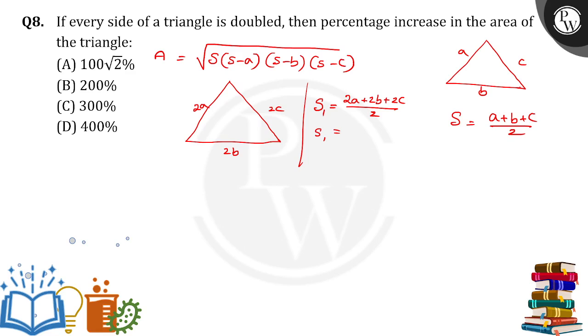If I take 2 common here, it will become A plus B plus C by 2, so S dash is equal to 2S.